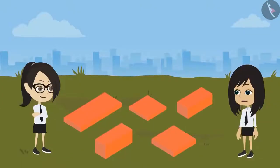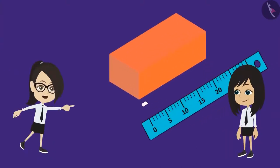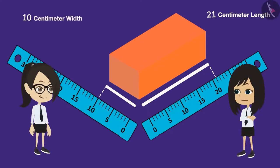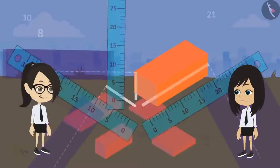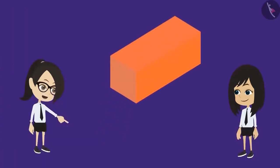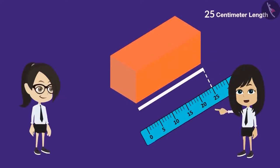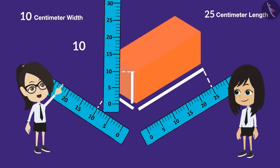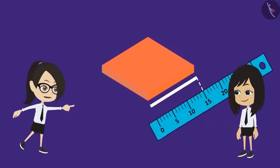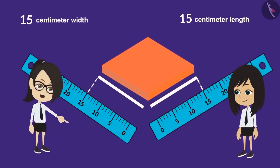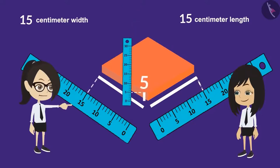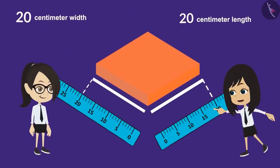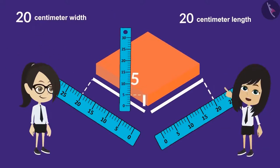Let's measure them. The length of this brick is 21 cm, the breadth is 10 cm, and the height is 8 cm. Now let's measure this one — the length of this brick is 25 cm, the breadth is 10 cm, and the height is also 10 cm. This brick is 15 cm long, its breadth is also 15 cm — the same as its length — and the height is 5 cm. This brick is 20 cm long, its breadth is also 20 cm, and the height is 5 cm.